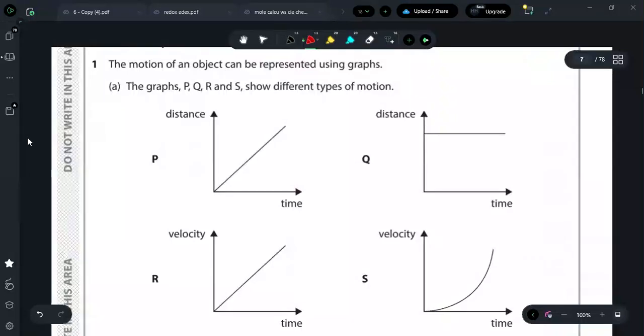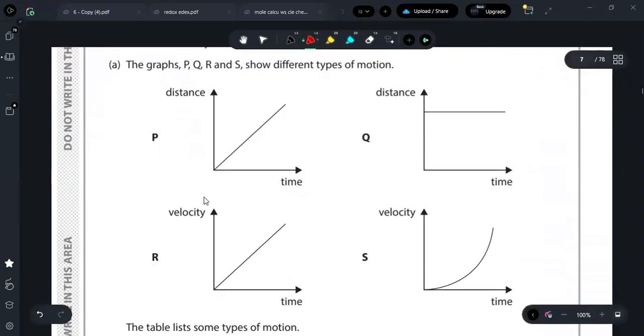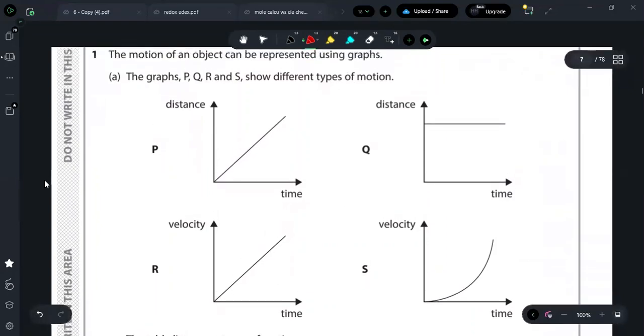First question says the motion of an object can be represented using graphs. The graphs P, Q, R and S show different types of motion. So there are different types of motion in each of the graphs P, Q, R and S. First, let's analyze each of the graphs.